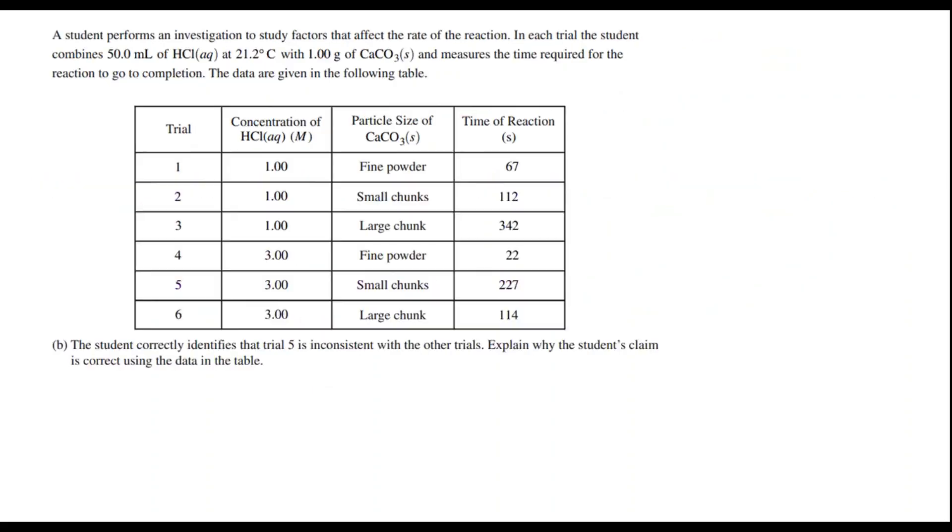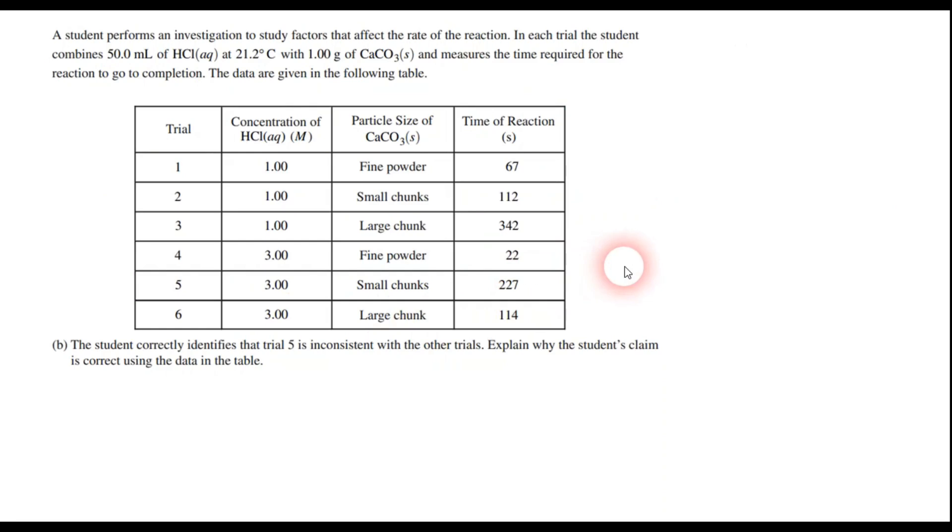Now part B, we have an investigation involving rates of reaction. This is an interesting question because we have basically two different concentrations, one molar and three molar, and for each time we're doing this, we use three different consistencies. We use a fine powder, small chunks, and large chunks. And in part B, it says the student correctly identifies that trial 5 is inconsistent with the other trials.